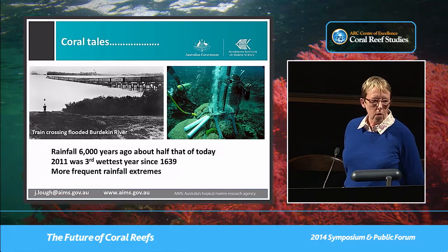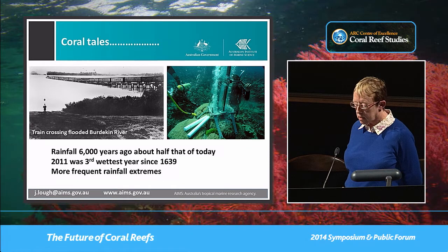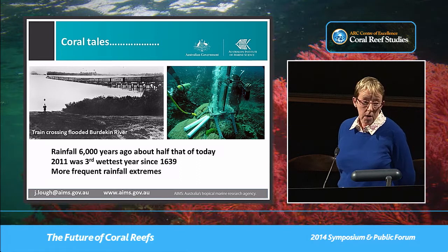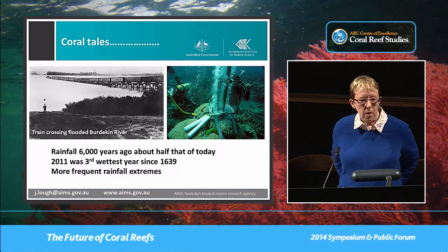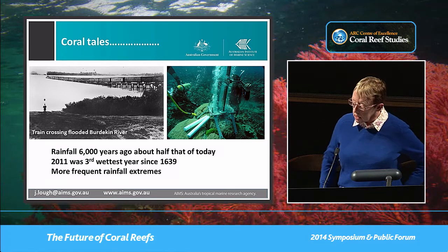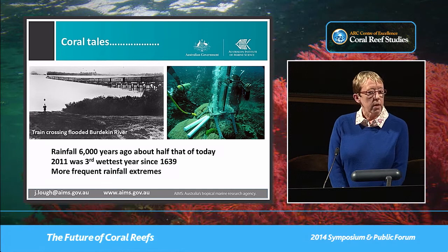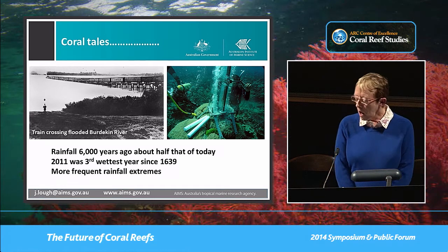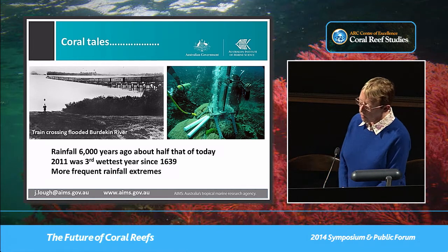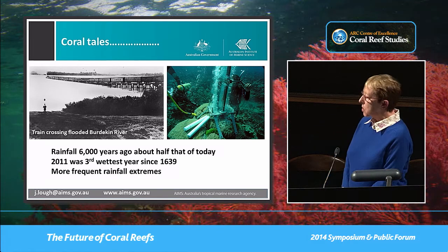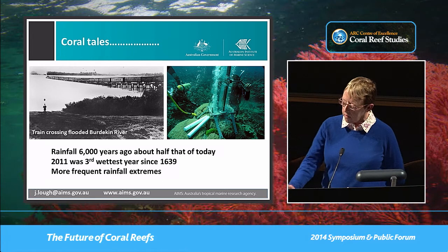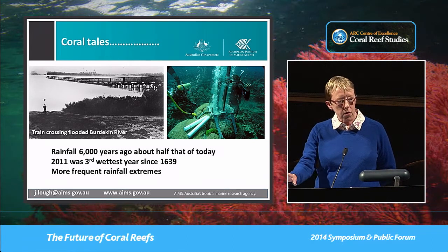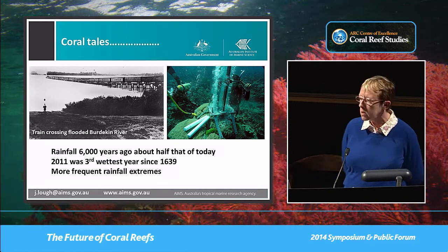So these corals are telling us lots of stories about what's happened in the past. We know rainfall 6,000 years ago was about half that of today. Also, 2011 was probably about the third wettest year going back 375 years, back to 1639. And the corals are also telling us that we are seeing more frequent rainfall extremes. This wonderful picture of a train crossing the flooded Burdekin River — all that water is leaving its records in the corals you see to the right.